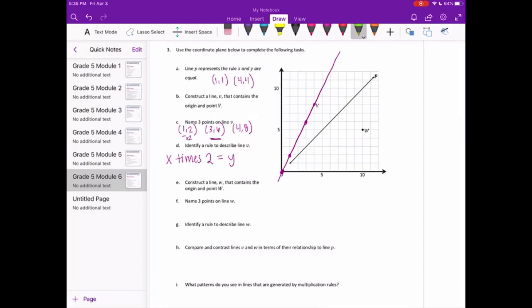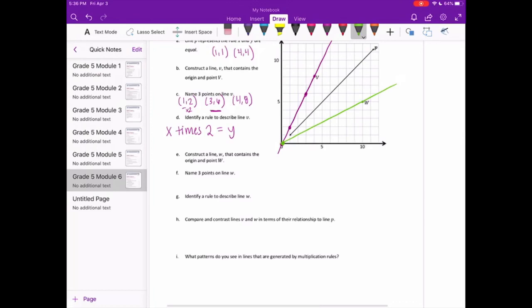Construct line W that contains the origin and point W. So again, we're using the origin. This time we're connecting it to W. Name 3 points on line W. I'm going to start with this one. So we have 2, 4. And let's pick that one. That is 8, 4.